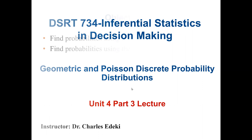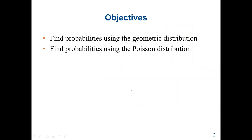Our main objectives are how to find probabilities using geometric distribution and how to find probabilities using the Poisson distribution. When we have a question where the event is based on an interval and the mean of the occurrences is given to us, we can use Poisson distribution. When the probability of success is given to us along with the random variable, we can use geometric distribution.